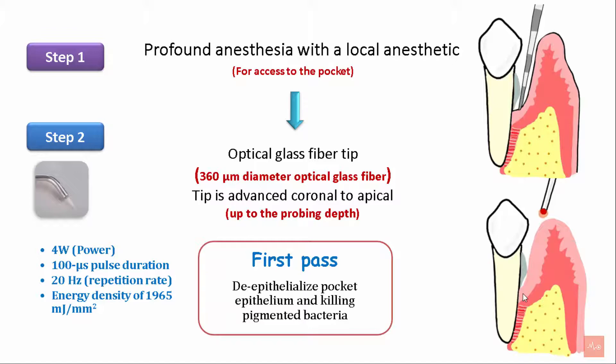The laser is set at a power of 4 watts, a pulse duration of 100 microseconds, a repetition rate or frequency of 20 Hz, and an energy density of 1965 millijoules per millimeter squared. The purpose of the first pass is to achieve de-epithelialization of the pocket epithelium and killing of the pigmented bacteria.